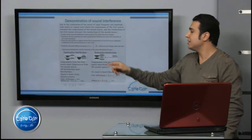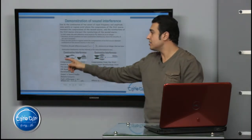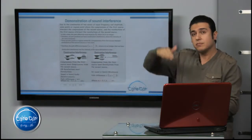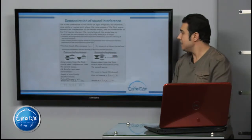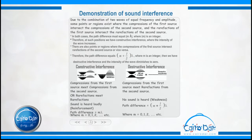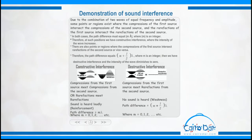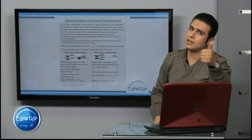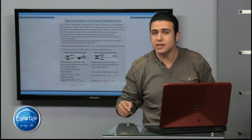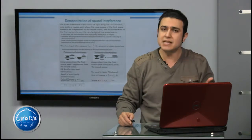If you compare constructive and destructive interference: in constructive interference, the resultant wave has maximum amplitude. In destructive interference, the waves cancel each other. The path difference for constructive interference is m·lambda. For destructive interference, the path difference is (m + ½)·lambda. Constructive interference occurs when compression meets compression, or rarefaction meets rarefaction. Destructive interference occurs when compression from the first source meets rarefaction from the second source.